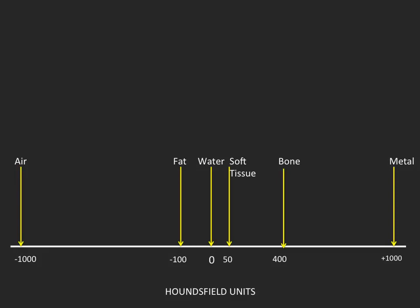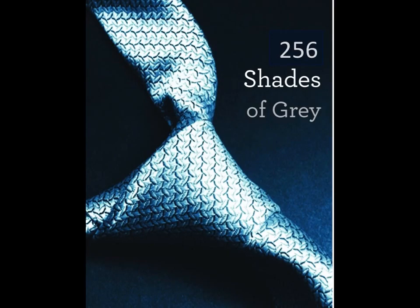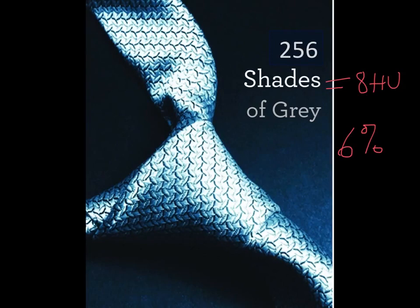Density on CT is measured in Hounsfield units, with zero being water, and typical Hounsfield unit measurements of soft tissues found within the body are shown here. A typical computer display monitor can show 256 shades of grey, which would be about eight Hounsfield units per shade of grey. But here's the kicker: our eye can only see a 6% change in greyscale. We're just not as sensitive — we can only see the difference between about 17 adjacent shades of grey.